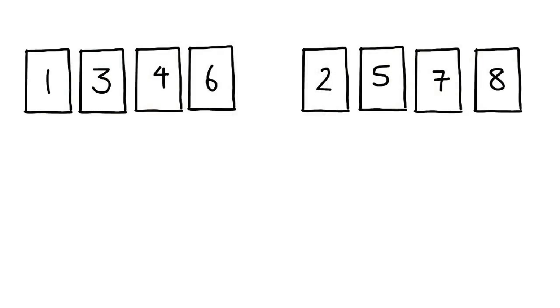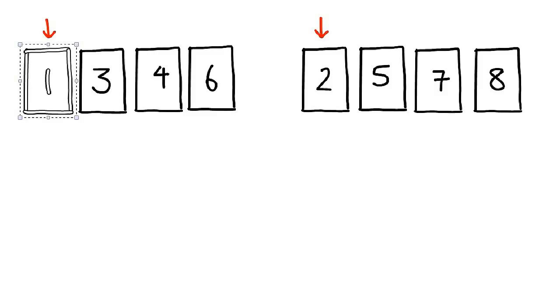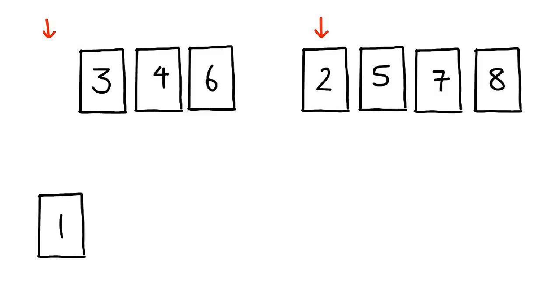Here's how that works. We take a look at both sublists. In particular, we want to take a look at the first item of each list. We pick the smaller one of the two, and we put it in a new list.